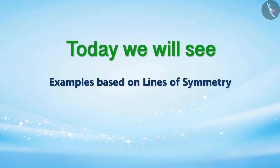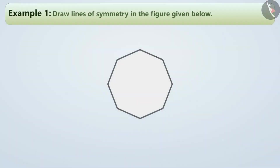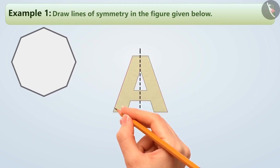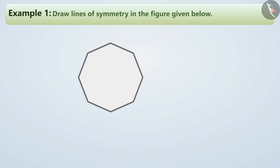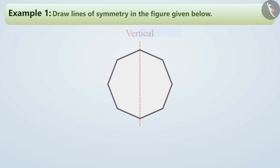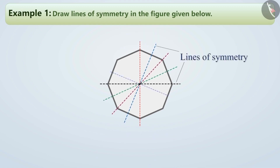Today we will see examples based on lines of symmetry. Draw lines of symmetry in the figure given below. In the previous video, we learned that a line is called a line of symmetry if it divides the figure into two equal halves such that when folded through that line, the figure covers the other half completely. Here, if we look at the vertical line passing through the center, it divides the figure into two halves which cover each other completely when folded. Similarly, we have eight lines of symmetry here.